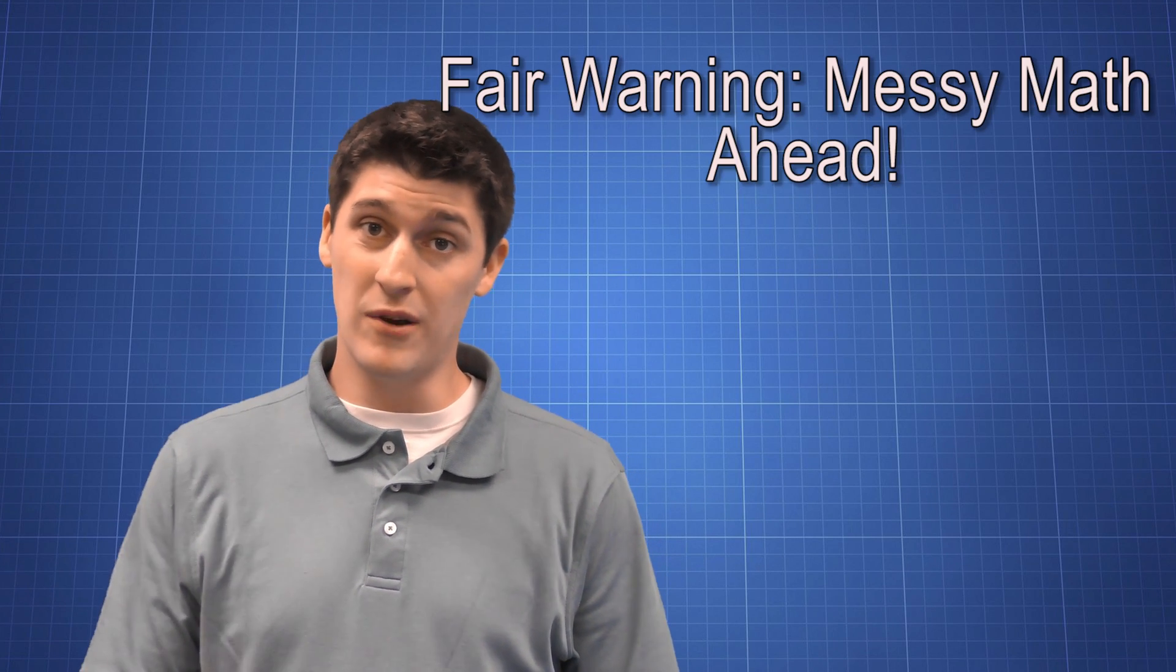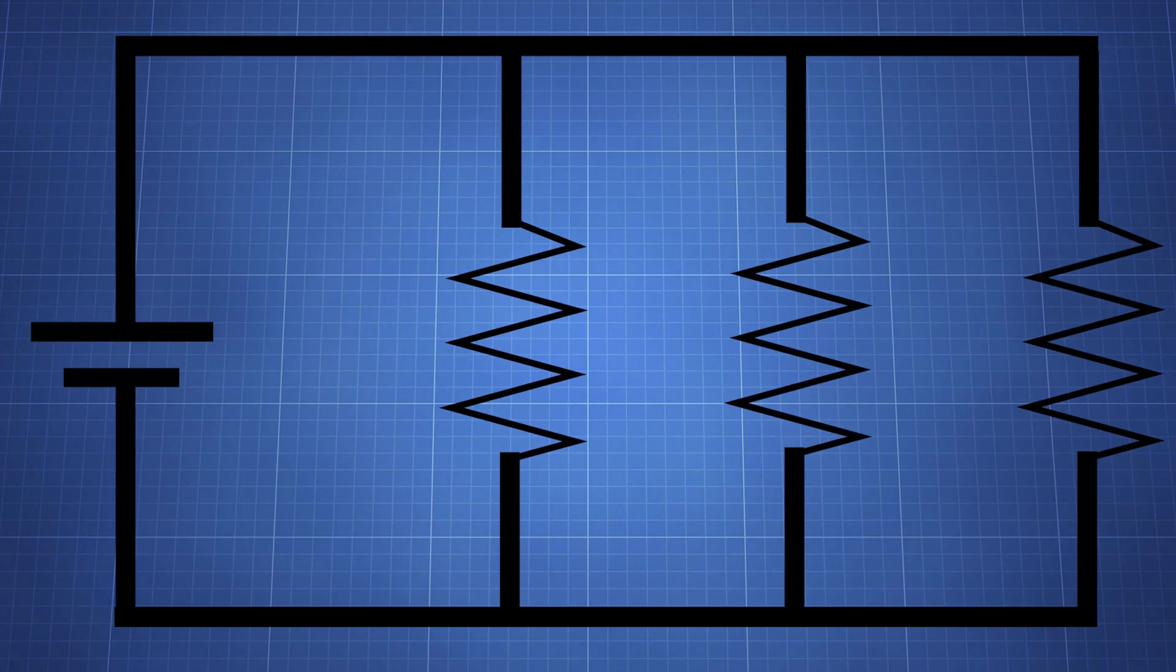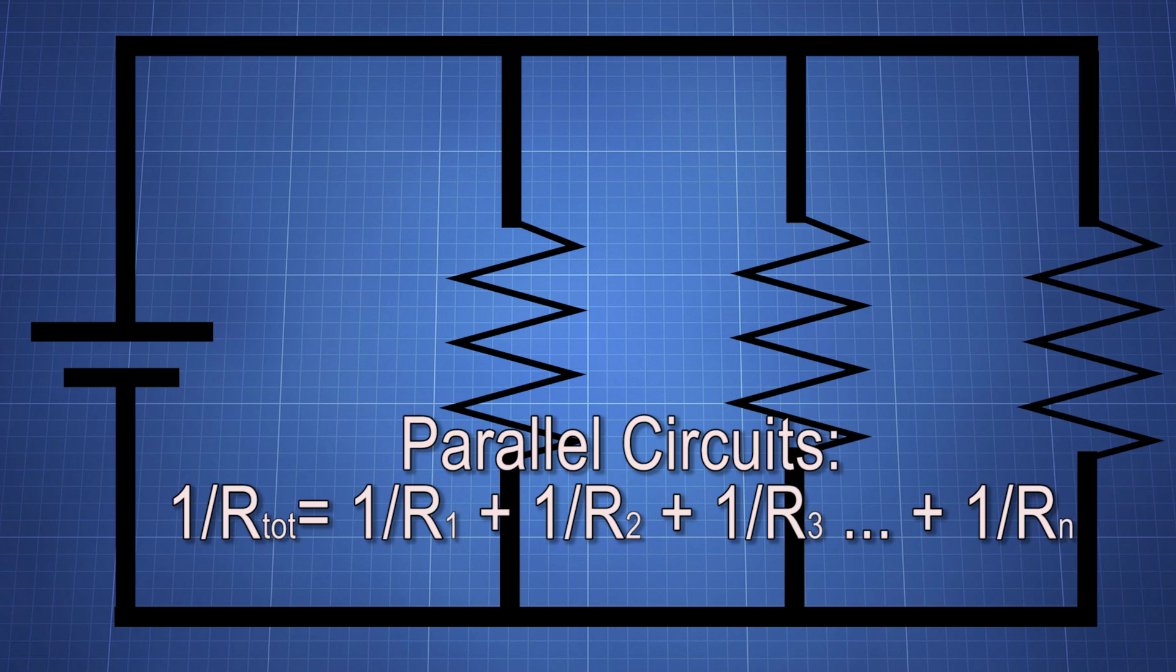Resistance, though, is a bit messy. The equation isn't as nice. To find the total resistance, we use this nasty formula: 1 over RT is equal to 1 over R1 plus 1 over R2 plus 1 over R3 plus however many other resistors we have. So it's a reciprocal equation, and reciprocals are kind of gross.